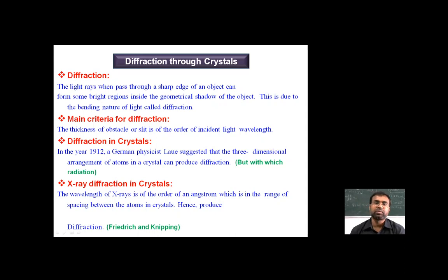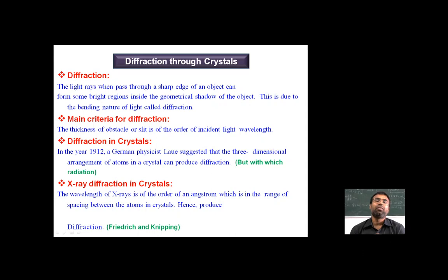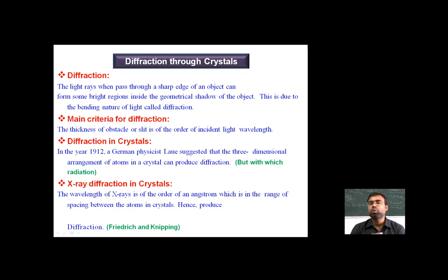We are going to discuss diffraction through the crystal and how a crystal is identified. Diffraction is when light rays pass through the sharp edge of an object and form some bright regions inside the geometrical shadow of that object. This is due to the bending nature of light — when light passes through a sharp edge, the region inside the geometric shadow starts brightening, showing the bending of light called diffraction.